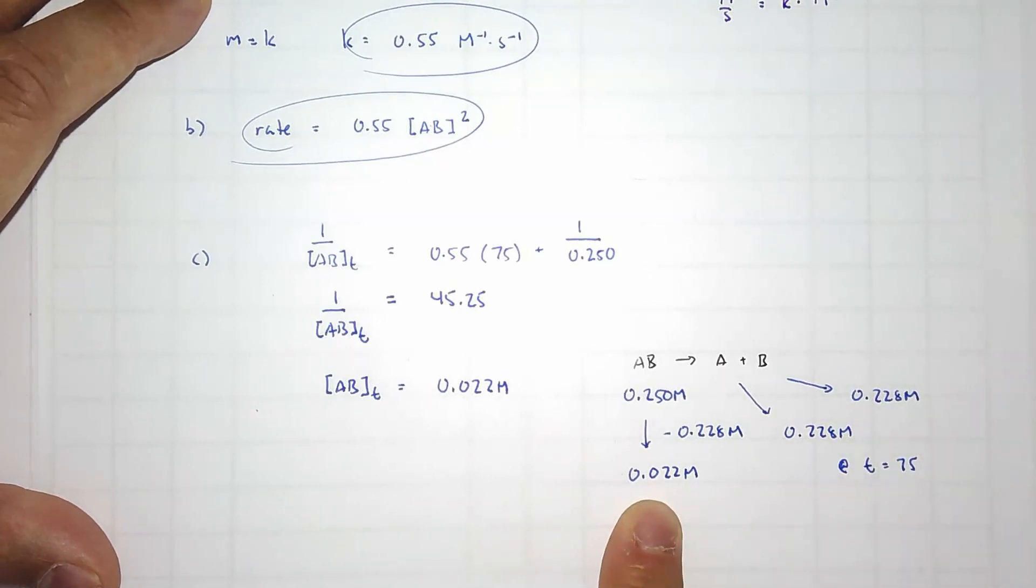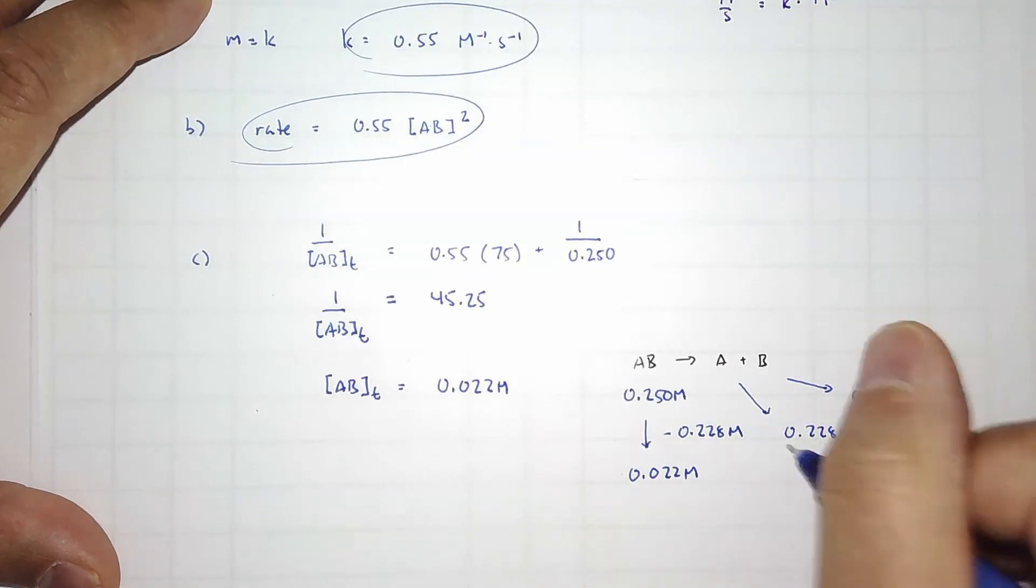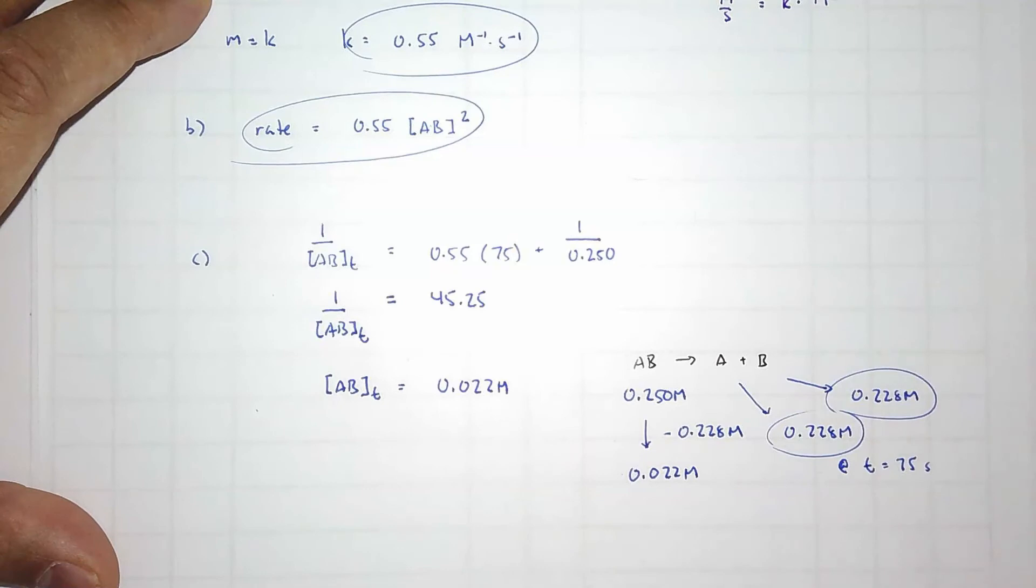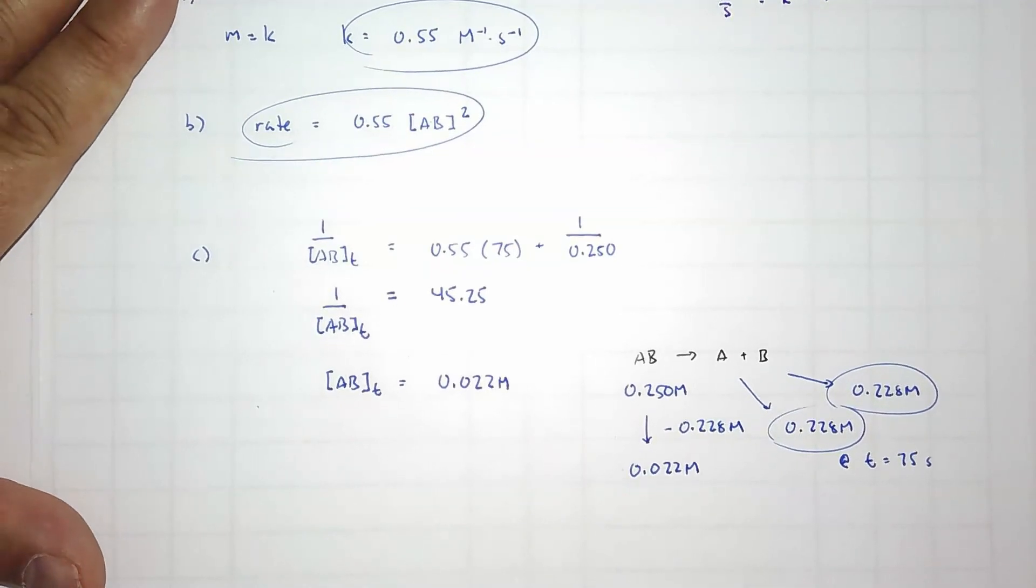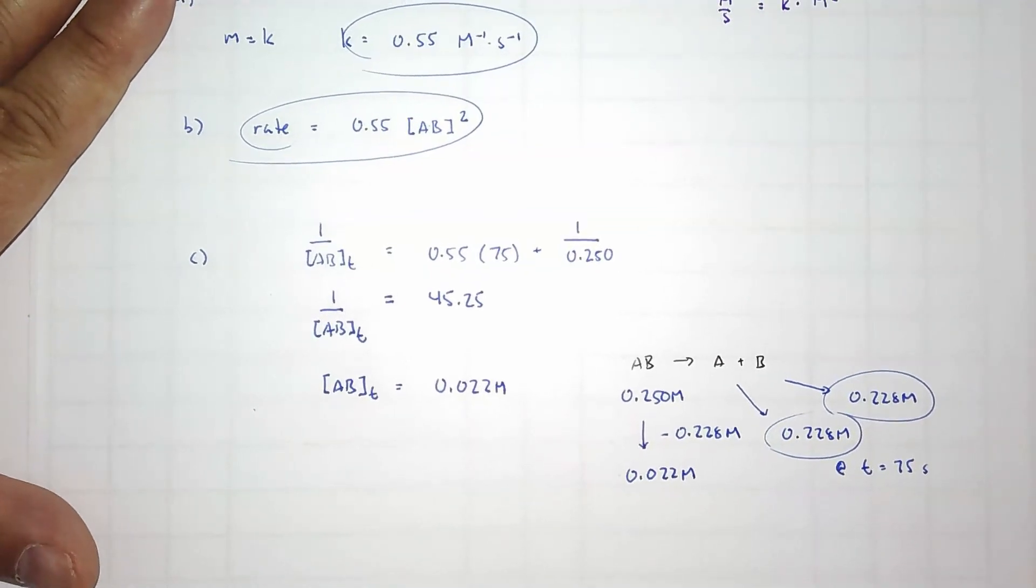At time equals 75 seconds. Because at time equals 75 seconds, we have 0.022 molar. We almost have none of it. Most of it had been consumed by 75 seconds. Those are the concentrations of A and B after 75 seconds.